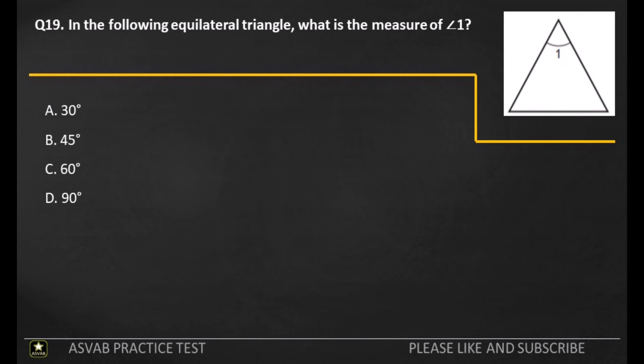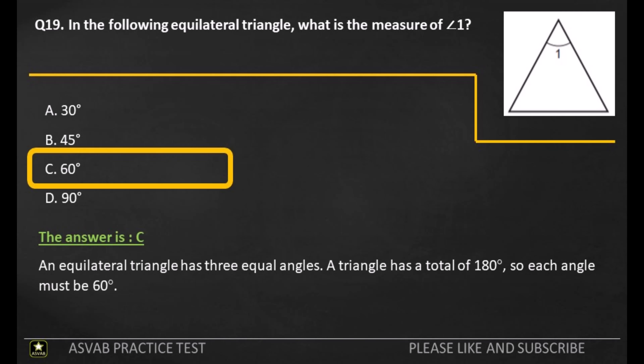Q19. In the following equilateral triangle, what is the measure of angle 1? A: 30 degrees. B: 45 degrees. C: 60 degrees. D: 90 degrees. The answer is C. An equilateral triangle has 3 equal angles. A triangle has a total of 180 degrees, so each angle must be 60 degrees.